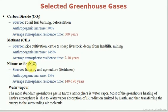Nitrous oxide — the source of nitrous oxide is industry, agriculture, and fertilizers. Human activities have contributed an anthropogenic increase of 15%, while the average atmospheric residence time is 140 to 190 years.